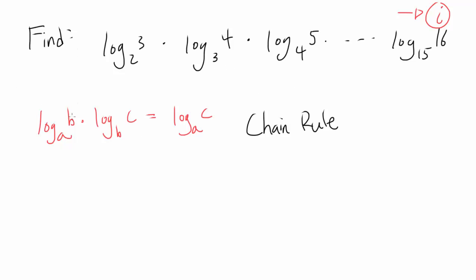The chain rule for logarithms tells you that this B and this B cancel out and you can simplify this to log base A of C. And that's what we're going to do.